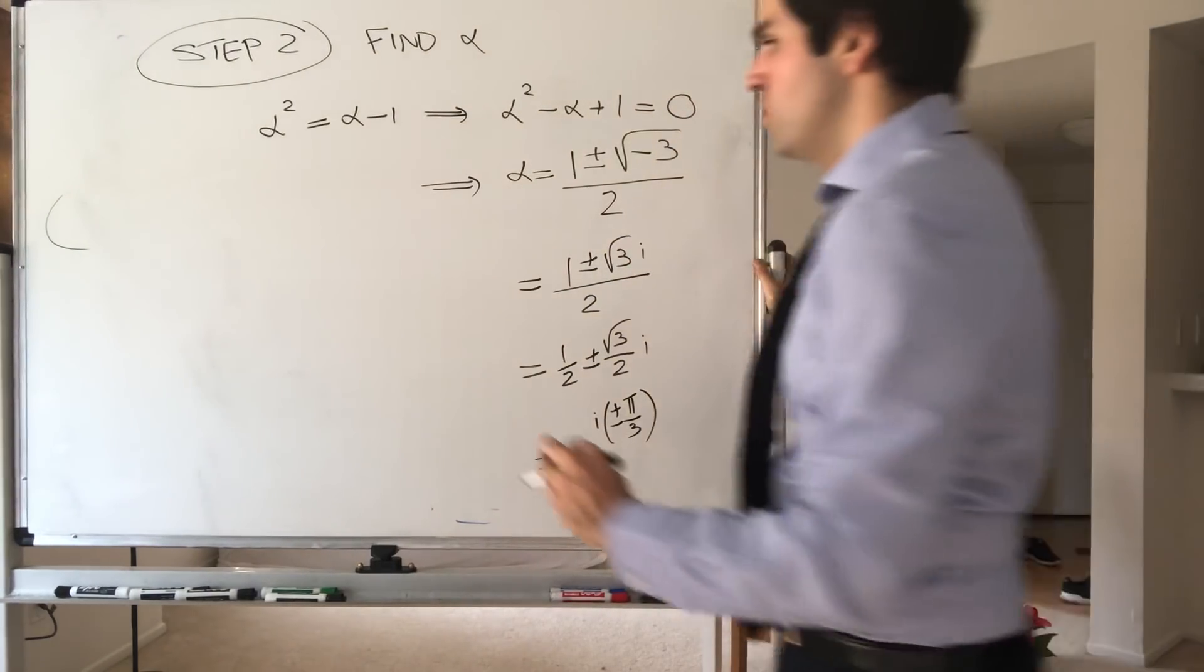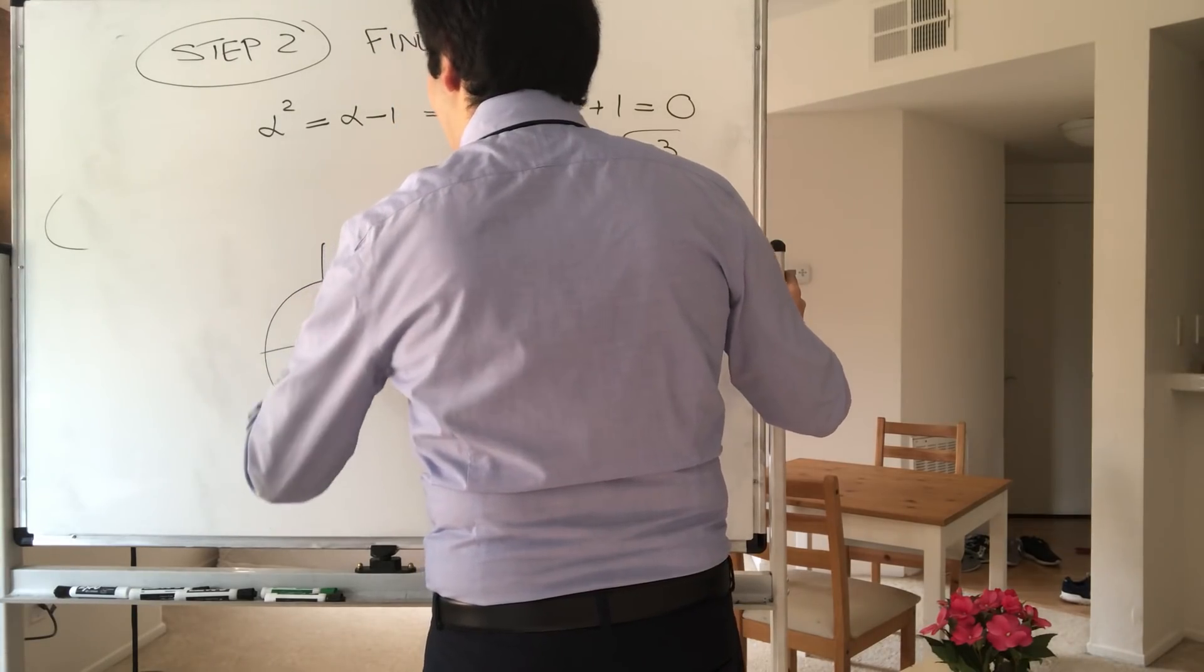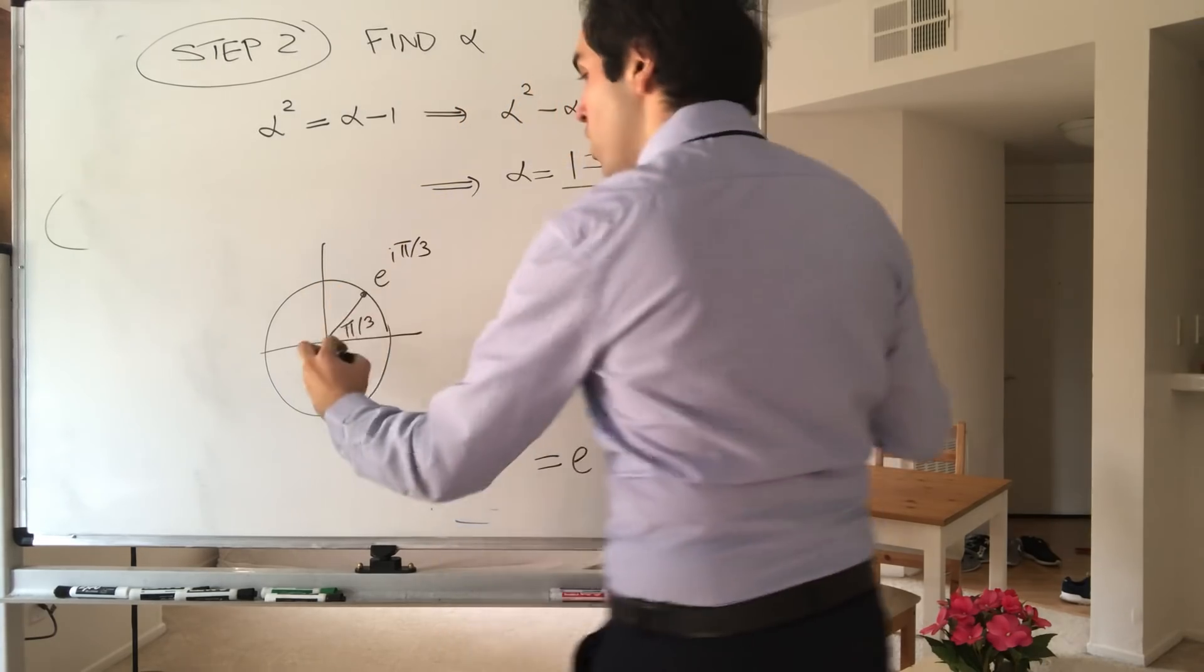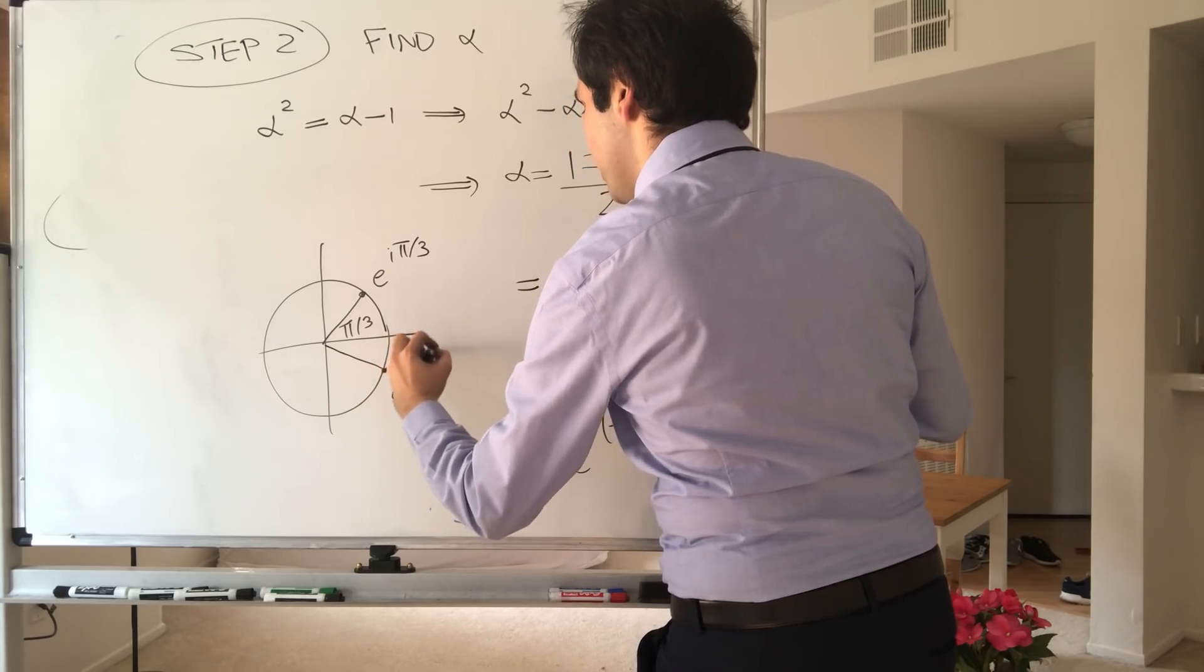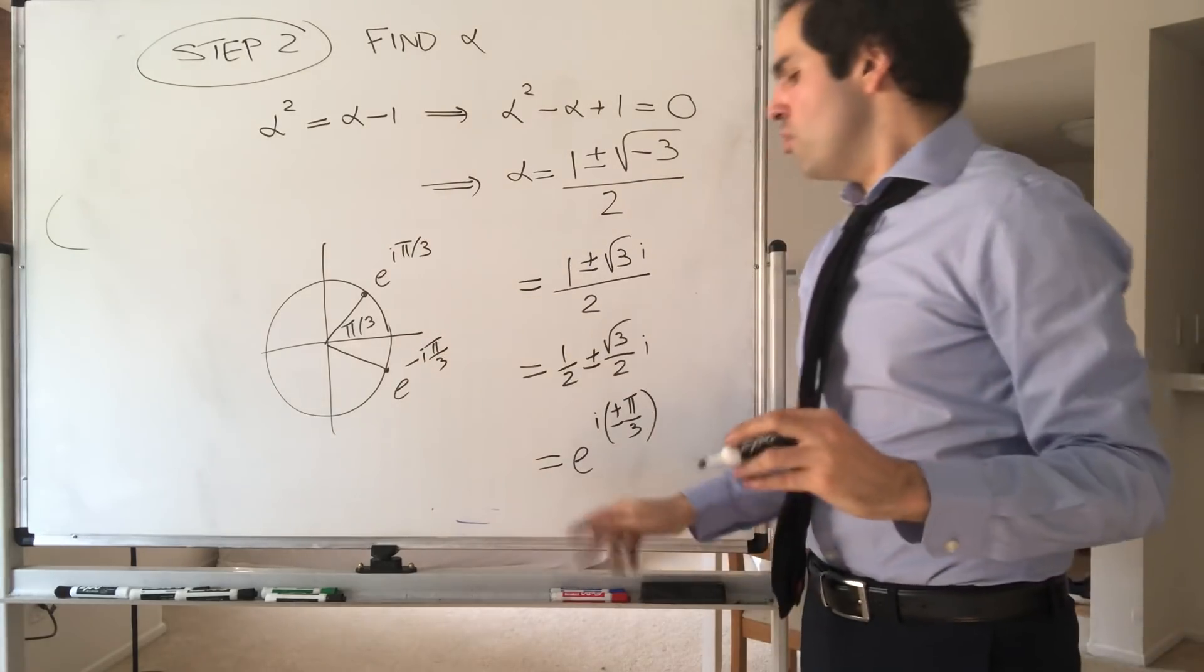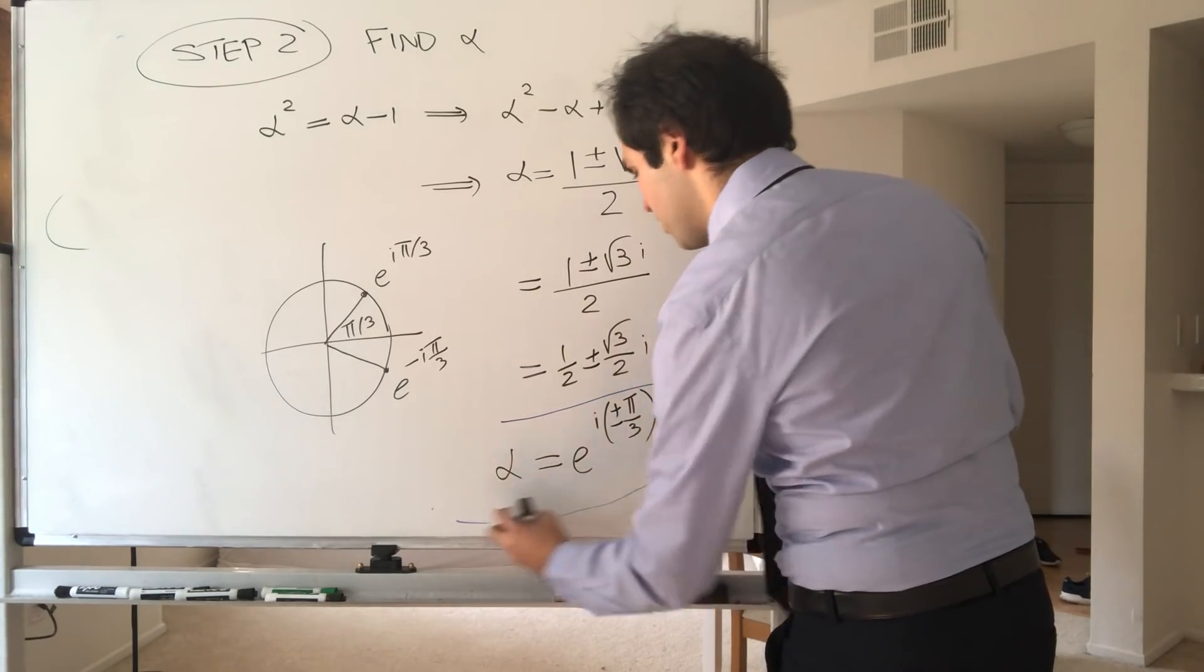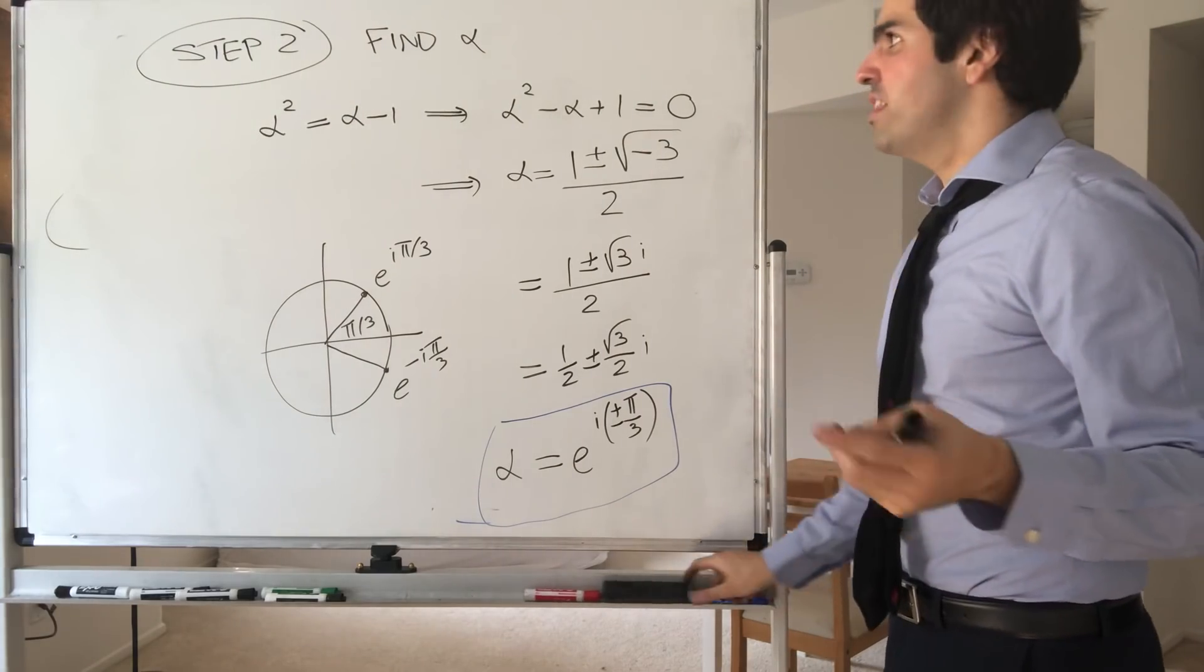In other words, in terms of trig circle, we're either here at an angle of pi over 3, so e to the i pi over 3, or we're down below with e to the minus i pi over 3. So alpha is either one of those two. And the point is, that's why we have to do it by cases.